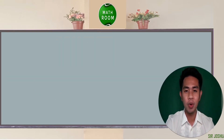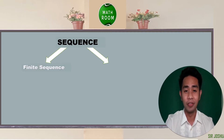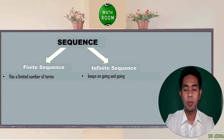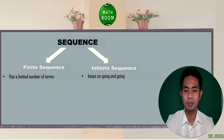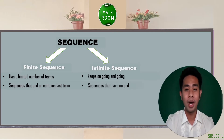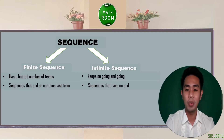There are two types of sequence: the finite sequence and the infinite sequence. When we talk about finite sequence, it means that the terms are limited. While in an infinite sequence, the terms keep going and going, meaning we don't have any last term. Finite sequences are sequences that end or contain a last term, while infinite sequences are sequences that have no end.